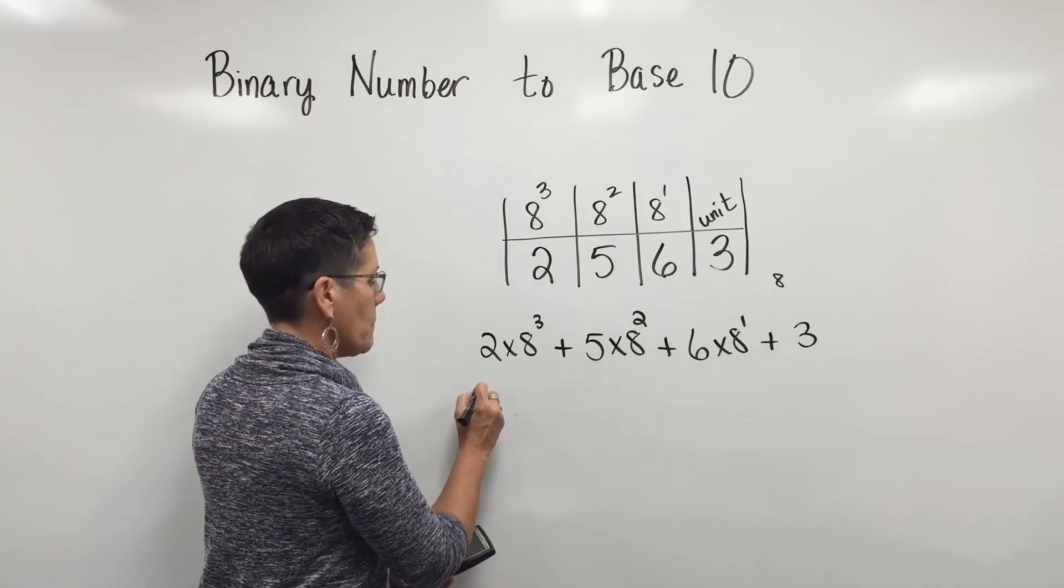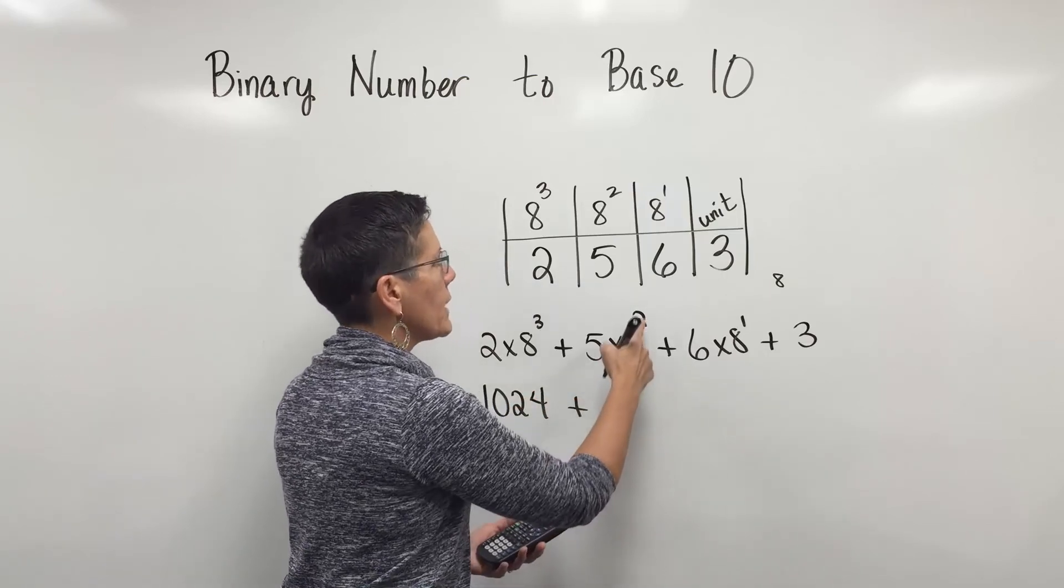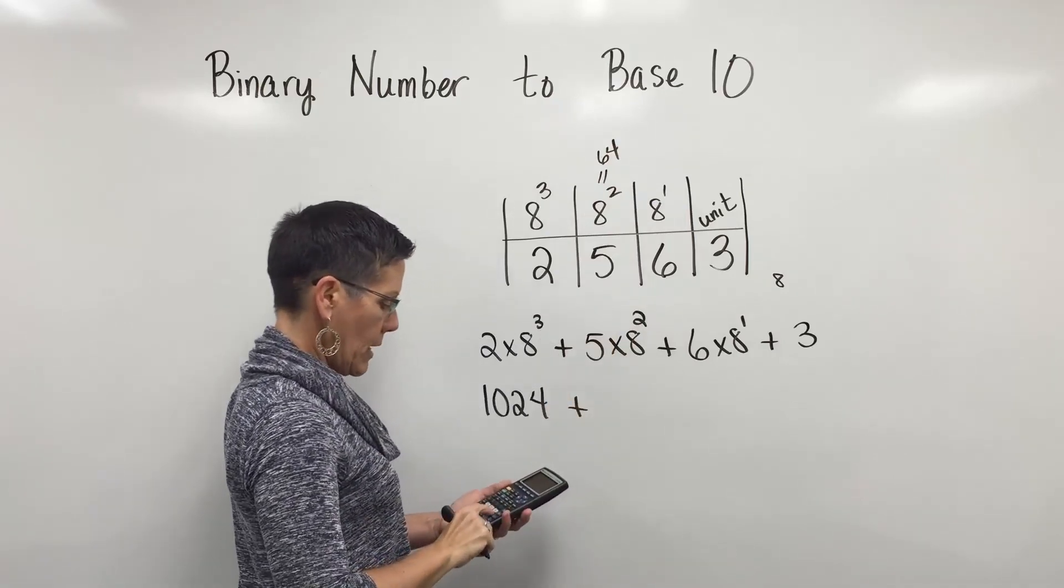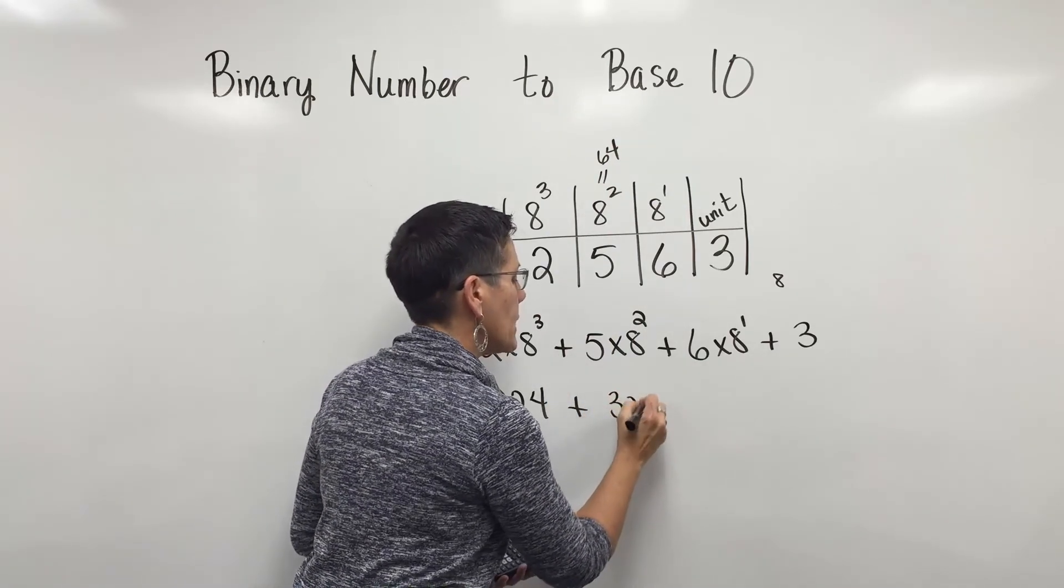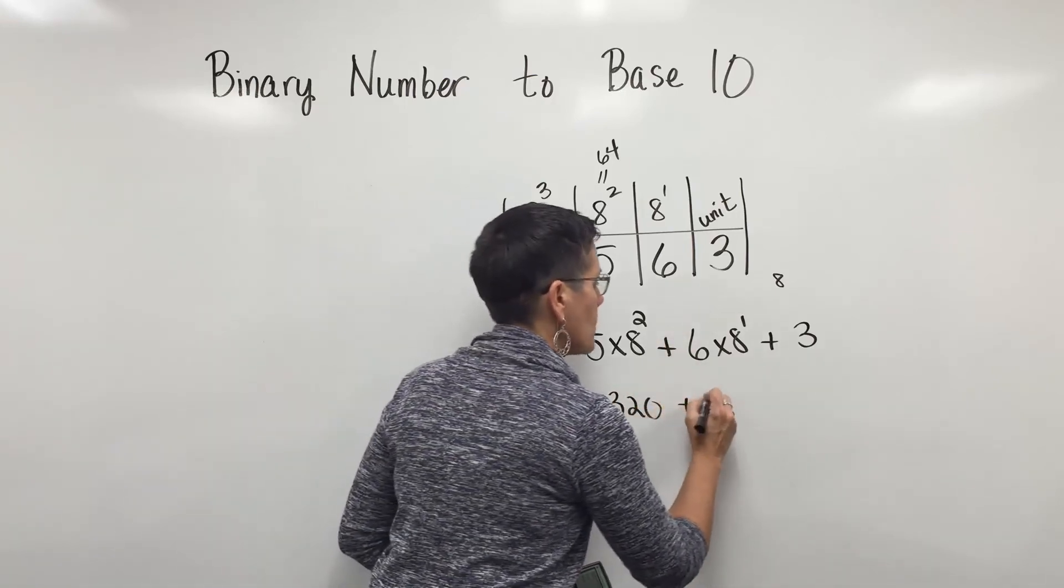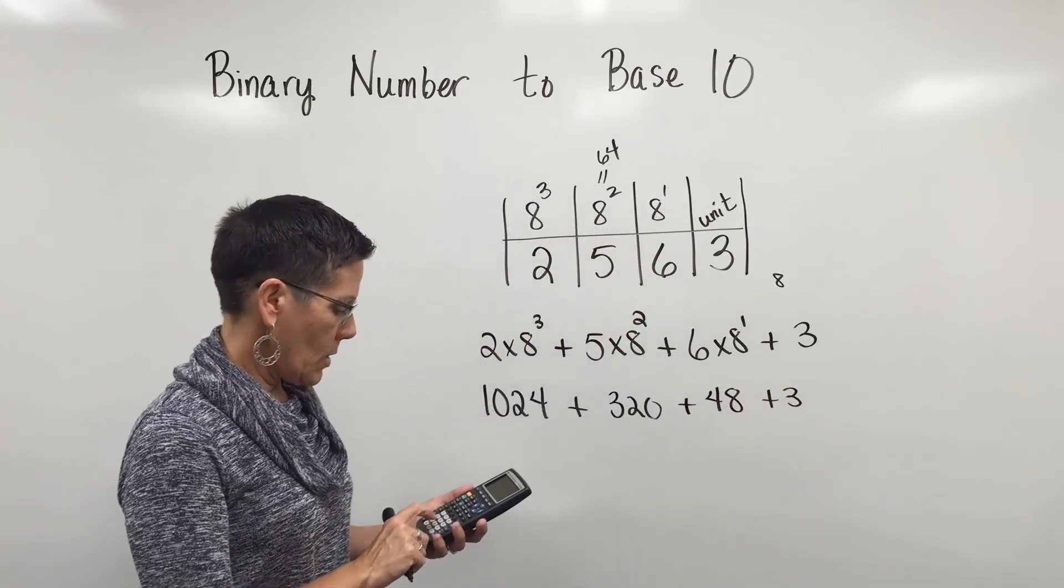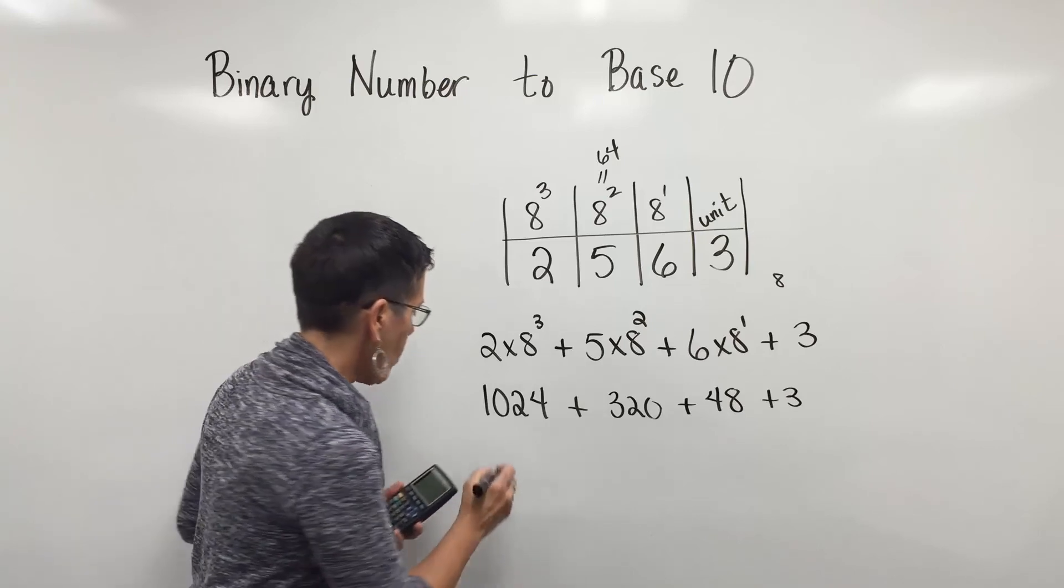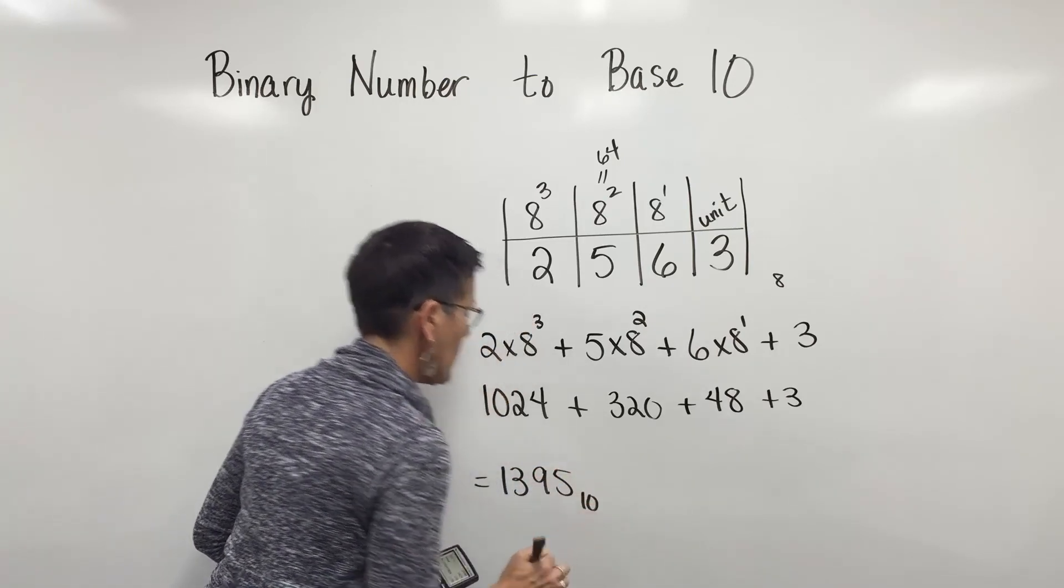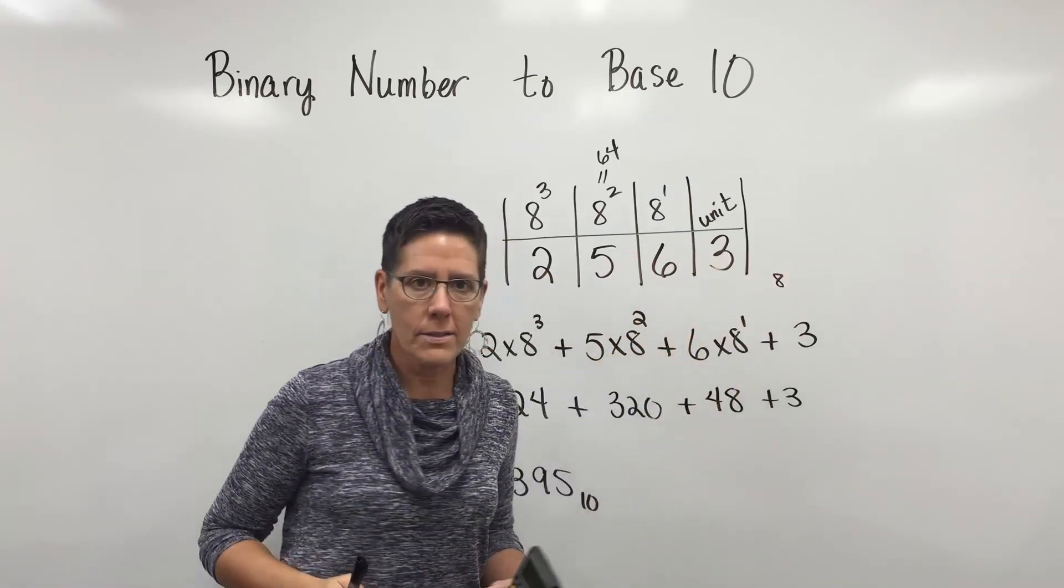I'm going to take my calculator and do these calculations. Two times 8 to the third represents 1024. 8 squared is 64, so I have five times 64 which is 320. These are going back to our world, the base 10 world. Six times 8 is 48, I'm going to add 3 to that. I have a total of 1395 in the base 10 world, which is the same thing as 2563 in octal notation.